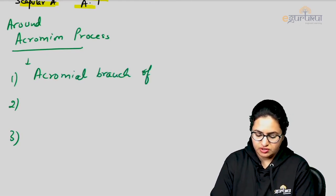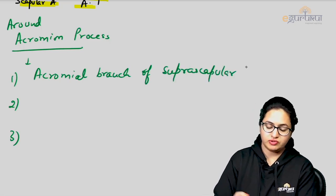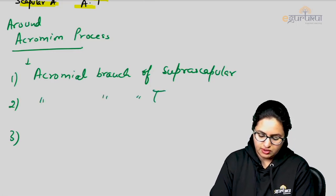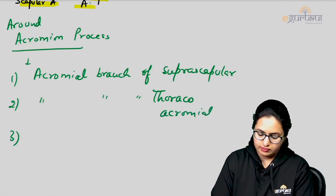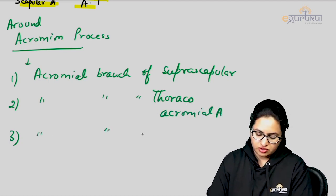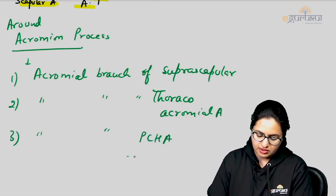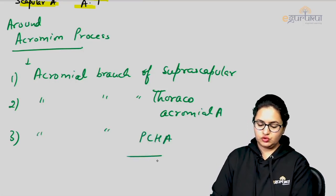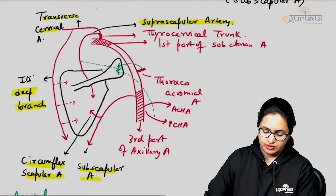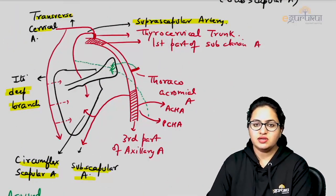To summarize, three arteries anastomose around the acromion process, and all three are acromial branches: the acromial branch of the suprascapular artery (arising from the first part of the subclavian), the acromial branch of the thoracoacromial artery, and the acromial branch of the posterior circumflex humeral artery. This completes the anastomosis around the scapula — both the body of the scapula and the acromion process.